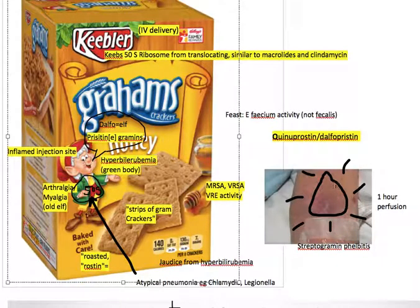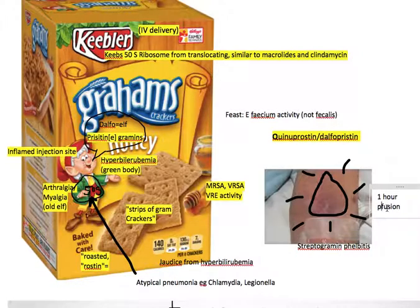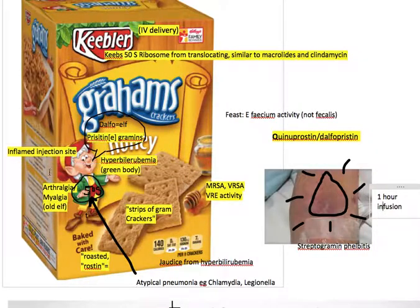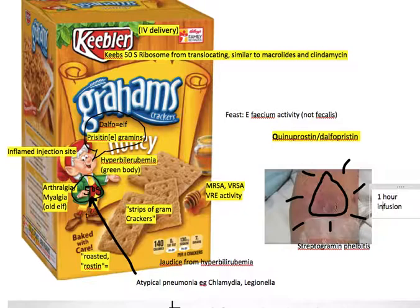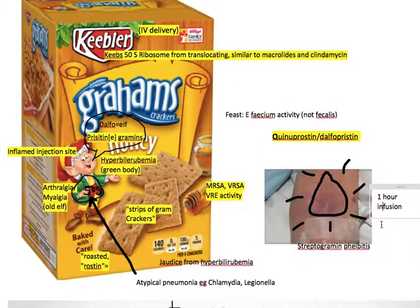There's also a side effect of inflammation at the site of infusion. You get this sort of red phlebitis, and we can remember this by the elf's red hat, which kind of looks like this red inflammation in the antecubital fossa area. The Keebler Elf's red hat reminds us of the phlebitis that is possible. This is why we slow down the infusion time and try to do it over the course of an hour.